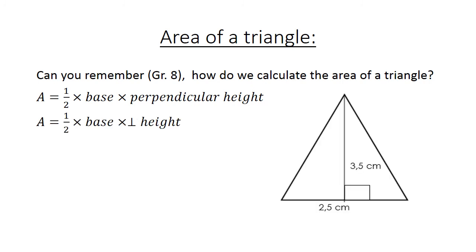Here we have a triangle, and our perpendicular height is now 3.5 cm. Area equals a half times 2.5 cm is my base, times 3.5 cm, equals 4.375 cm square.